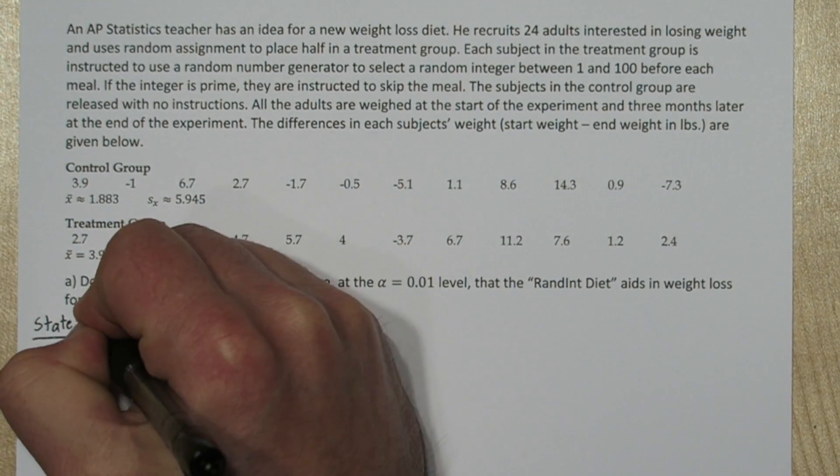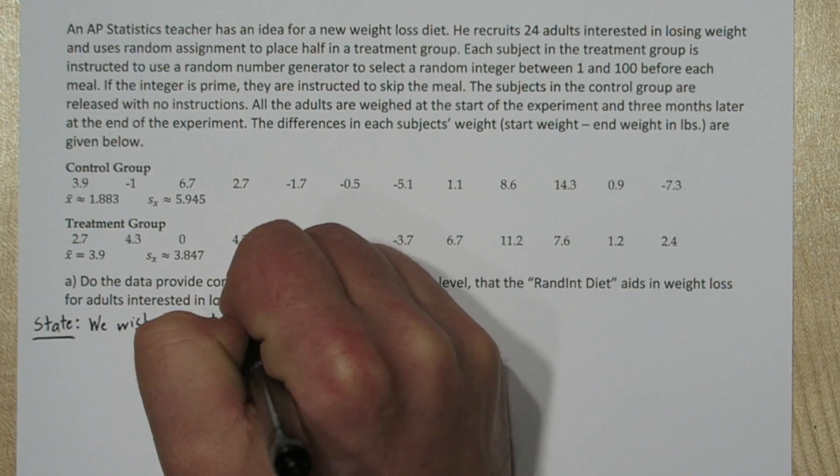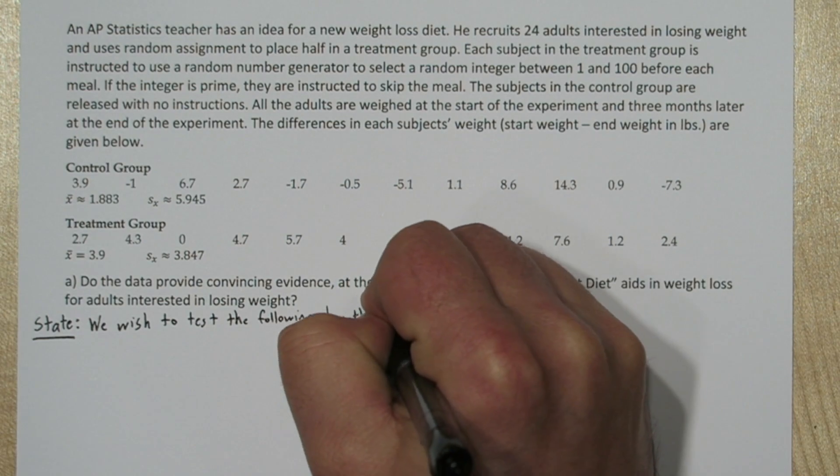We're going to use the four-step solving process. So we wish to test the following hypotheses at the alpha equals 0.01 level.